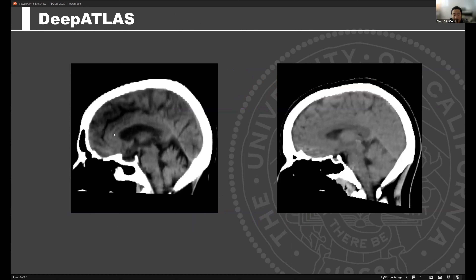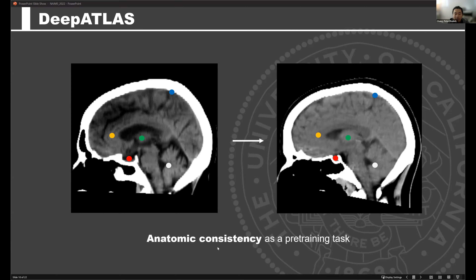The particular pretext task our group is interested in is creating a problem where the model must label each specific portion of the body — in this case the brain — with a unique identifier and a unique coordinate system, such that the pituitary, the thalamus, and the fourth ventricle are all labeled uniquely and exactly the same way for every single patient. This type of anatomic consistency, forcing the algorithm to do this task over and over again, is actually a very strong regularizer — it helps the model learn quite a bit from data without any labels. You can think about it as a form of contrastive learning, taking similar parts of each image and mapping those similar parts to each other.